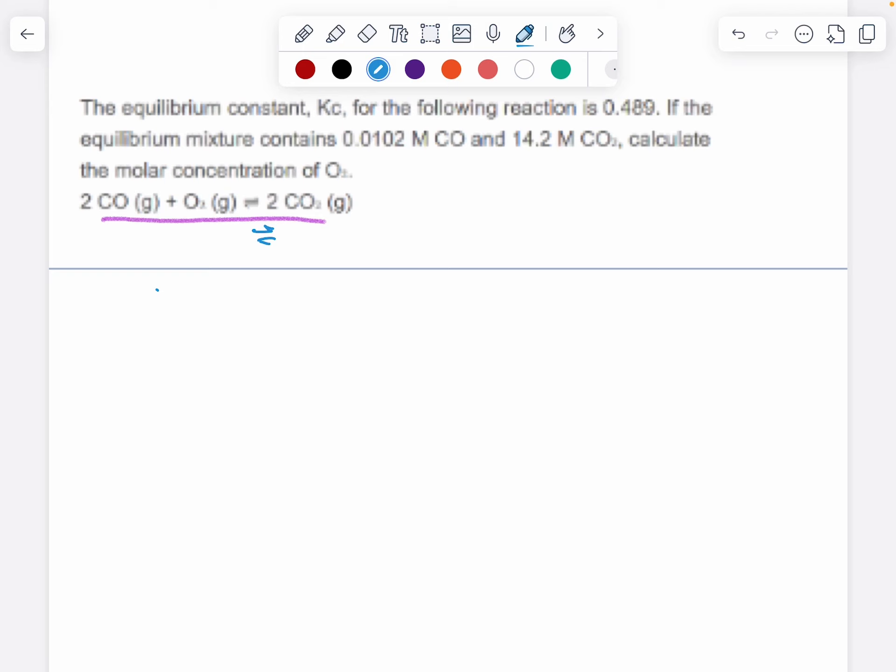This reaction is in equilibrium and the constant for that equilibrium process is 0.489. If you have these concentrations, calculate the molar concentration of oxygen. So Kc is the equilibrium constant, and the expression that the equilibrium constant comes from is the concentration of products raised to their stoichiometric coefficients divided by the concentration of reactants.